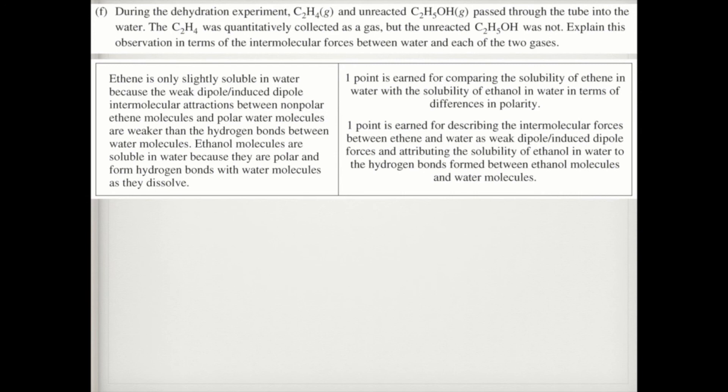During the dehydration experiment, C2H4 and unreacted C2H5OH passed through the tube into water. The C2H4 was quantitatively collected as a gas, but unreacted C2H5OH was not. Explain this in terms of intermolecular forces between water and each of the gases. Since C2H4 is nonpolar with London dispersion forces, the attraction between it and water is extremely weak, causing it to be only slightly soluble if soluble at all. However, C2H5OH has hydrogen bonding, and so does water, so there's stronger attraction between the molecules. As a result, C2H5OH is more soluble in water. One point for comparing the solubility of ethene versus ethanol, and one point for talking about intermolecular forces—induced dipole for ethene and hydrogen bonds for ethanol.